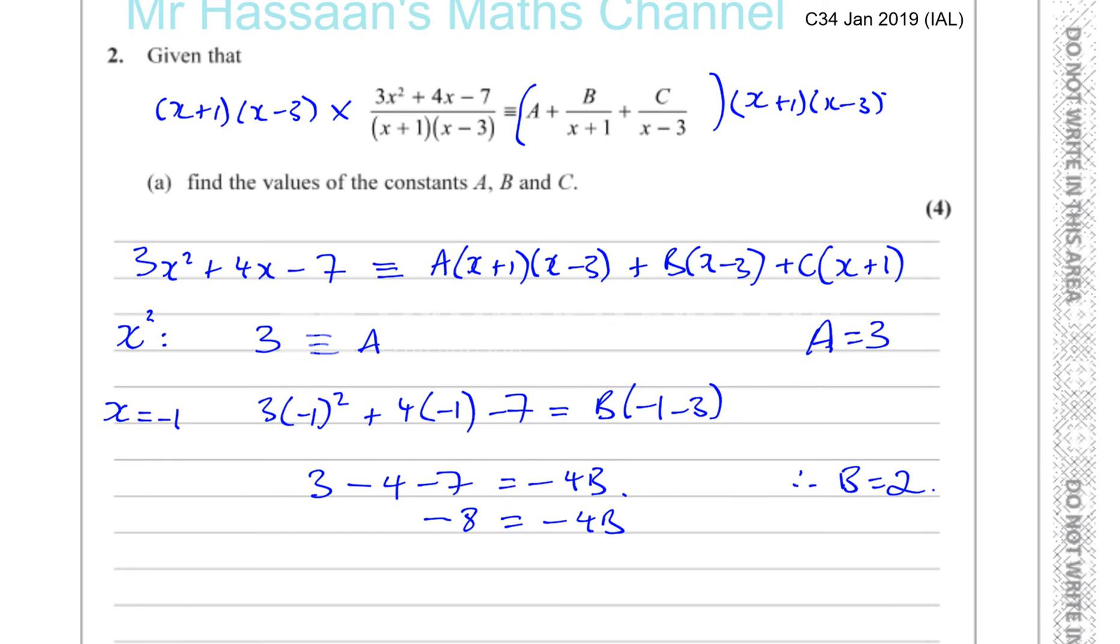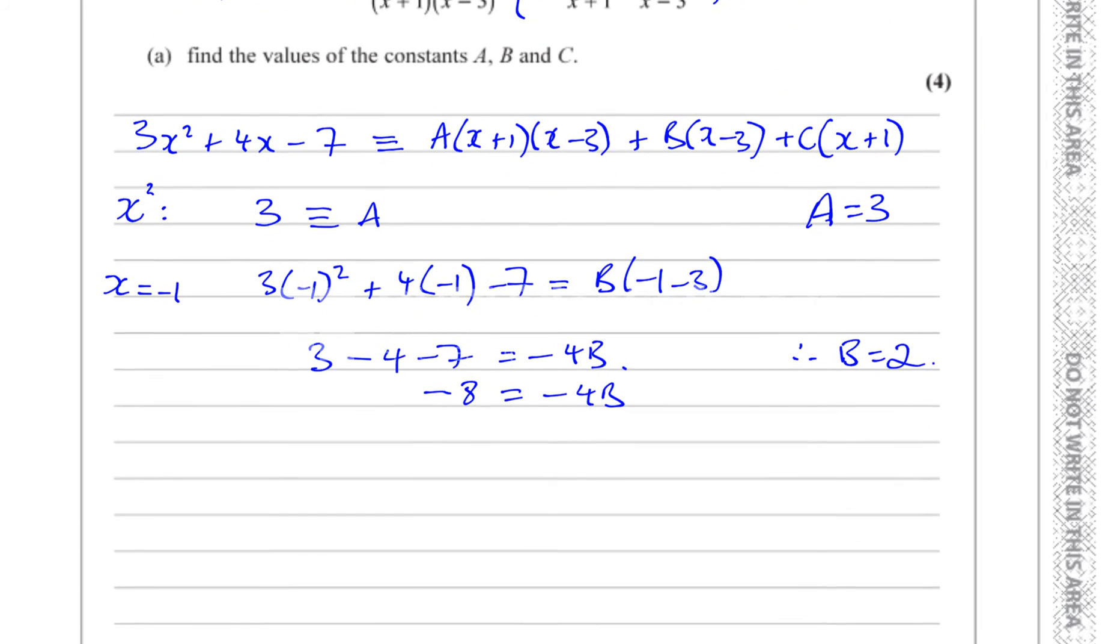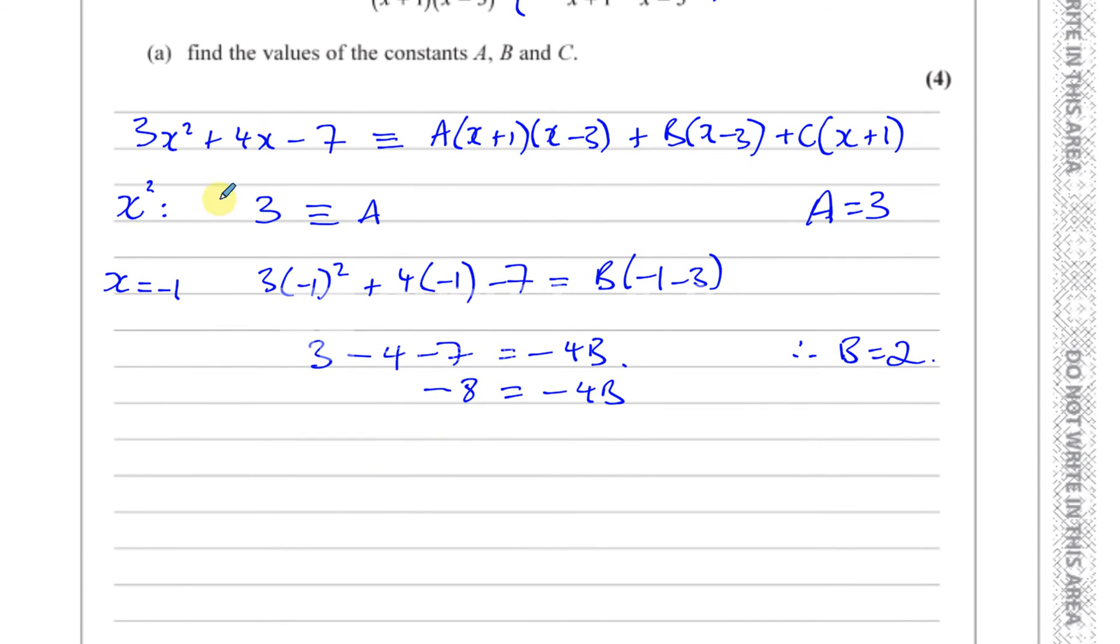To find the C term, I think the easiest thing to do, instead of substituting in 3 which we could do, is to compare the constants. Because the constant terms, if you look at the constants on the left-hand side you have -7. On the right-hand side you're going to have A times -3, which is -3A, and you're going to have -3B.